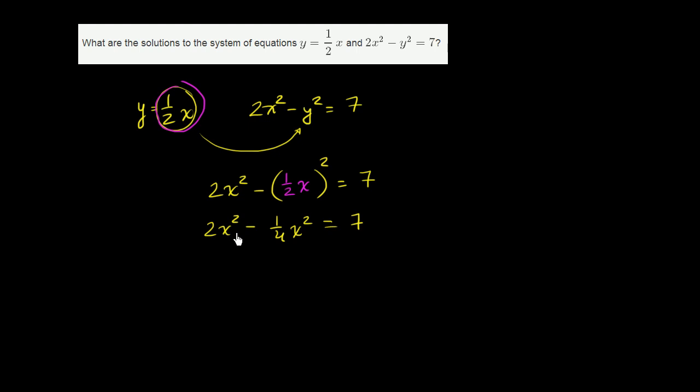So I have 2x squared, and I subtract out 1 fourth x squared. So I'm going to have 1 and 3 fourths x squared. Or you could view this as 8 fourths minus 1 fourth is 7 fourths x squared. 7 fourths x squared is equal to 7. Multiply both sides by the reciprocal of 7 fourths, so 4 sevenths. And we get x squared is equal to 4.